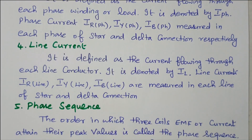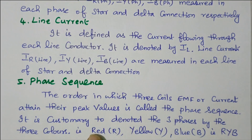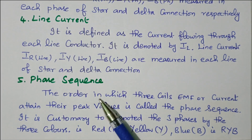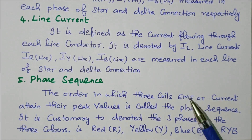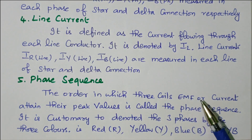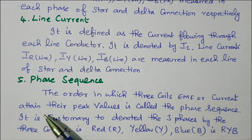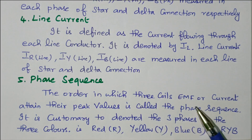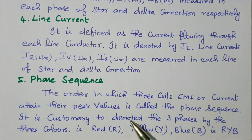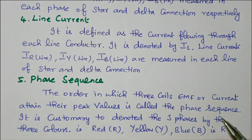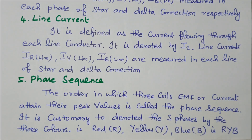Phase sequence of a three-phase network: the order in which the three-coil EMFs or currents attain their peak value is called phase sequence. It is customary to denote the three phases by three colors — red, yellow, and blue — represented as R, Y, B. That is the phase sequence.